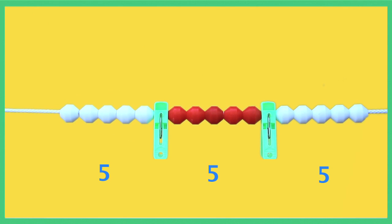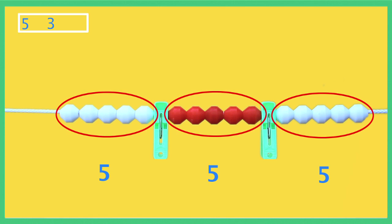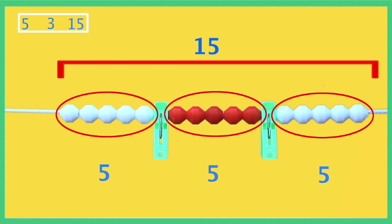This establishes the relationship between these three basic facts of multiplication: number in each group, number of groups, and the total.